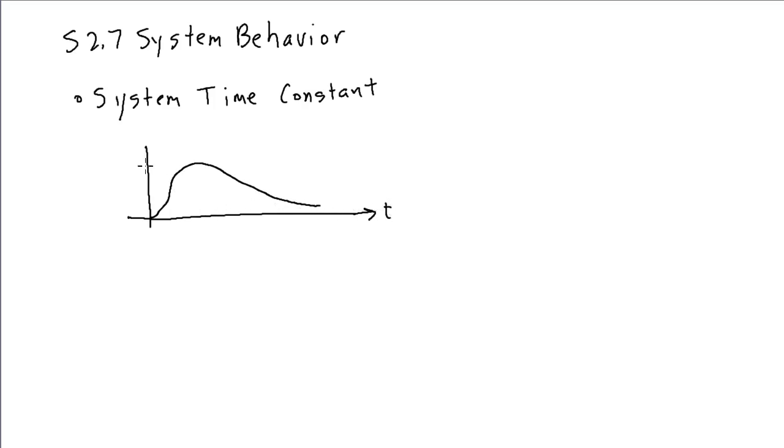with a peak value that occurs at some time t0 and a corresponding peak value of ht0. We'll define the pulse time constant as the width of an equivalent system that has the same maximum value,